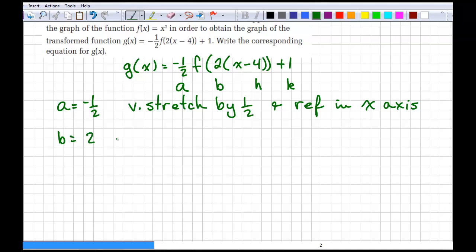So, for a equals negative 1 half, we have a vertical stretch by 1 half and a reflection in the x axis. For the b value of 2, we've got a horizontal stretch, also 1 half because remember that our horizontal stretches are 1 over b. So, in this case, if b is 2, it's going to be a horizontal stretch also by 1 half. It's a positive, so there's no reflection. Our h value is 4, which means we're moving to the right 4, and our k value is positive 1, which means we're moving up 1.